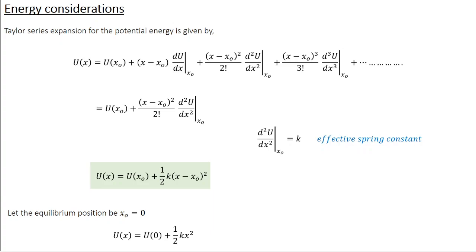In general, the potential energy function can be expanded as an infinite series known as a Taylor series. If x₀ is the equilibrium position, you can write U(x) as U(x₀) plus (x − x₀) dU/dx evaluated at x₀, plus (x − x₀)²/2! d²U/dx² at x₀, plus (x − x₀)³/3! d³U/dx³ at x₀, all the way to infinity.